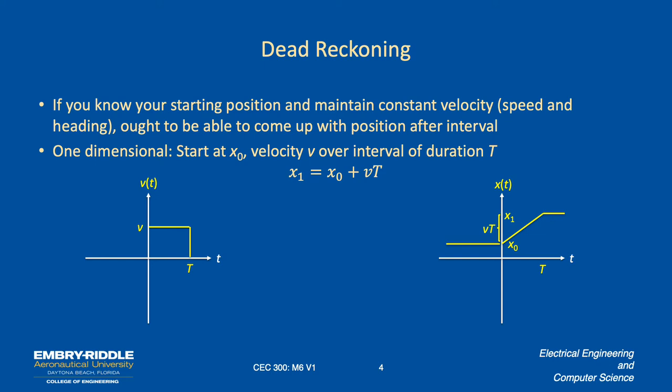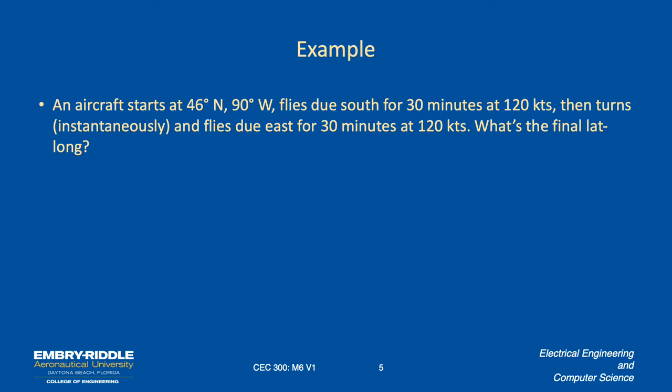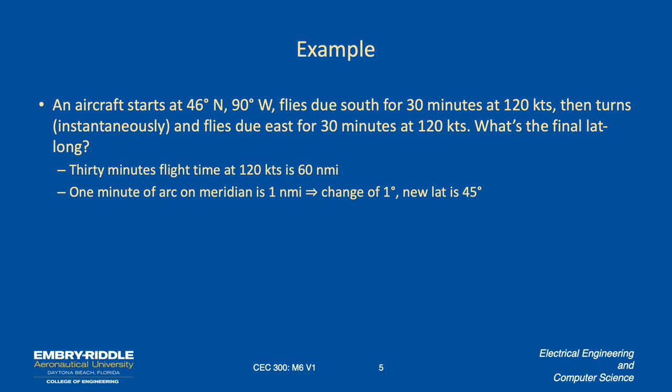Here's a problem: you got an aircraft at 46° N, 90° W. It's flying due south for 30 minutes at 120 knots, and then it turns instantaneously - again, simple toy problems first and then real problems - and flies due east for 30 minutes at 120 knots. What's the final lat long? Well, going 120 knots, in 30 minutes you're going 60 nautical miles.